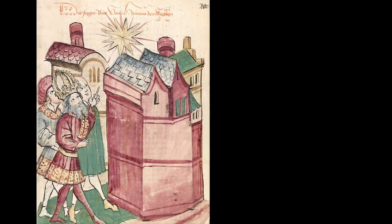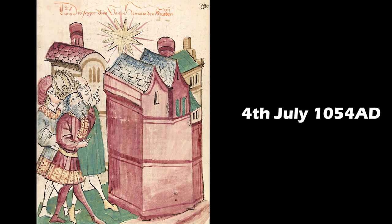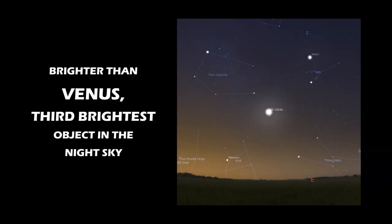There is documented evidence that on the 4th of July 1054 AD, people across the world noticed the sudden appearance of a star blazing in the daytime sky. It was so bright that it outshone the planet Venus and temporarily became the third brightest object in the night sky.